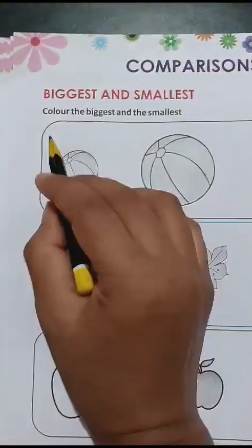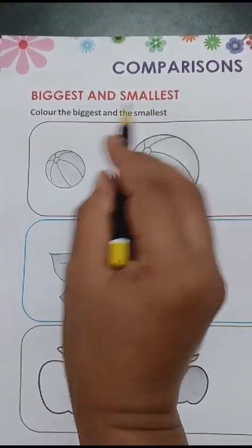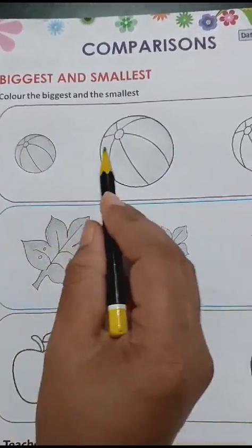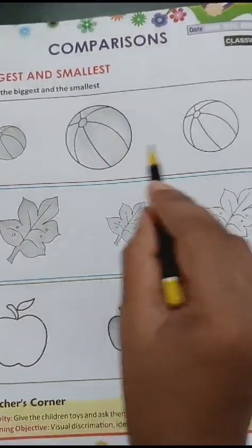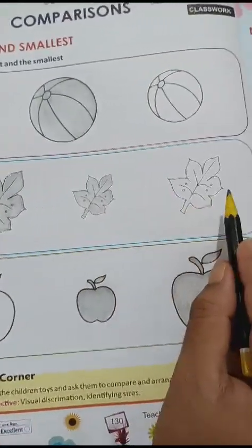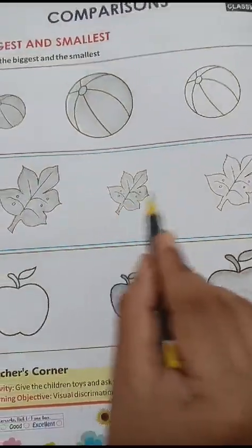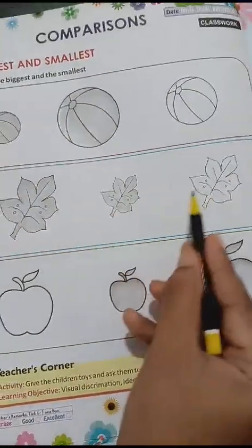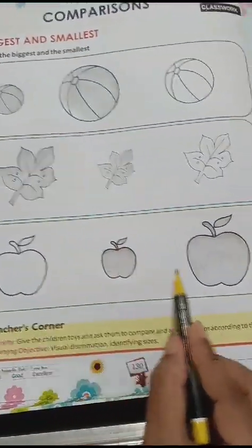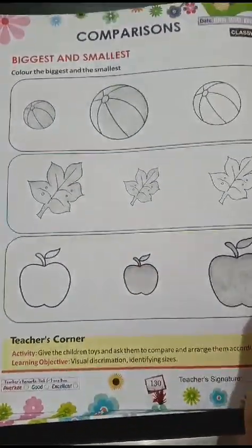Next. Comparisons. Biggest and smallest. Colour the biggest and the smallest. तो यहां पर देखो. तीनों balls हैं. यहां पर तीनों leaves यानि की पत्ता. और यहां पर apples हैं. ठीक है?